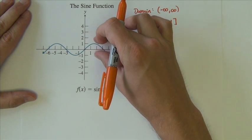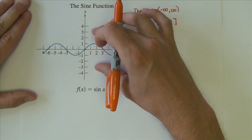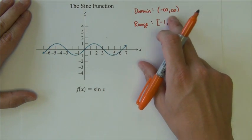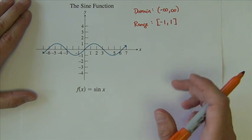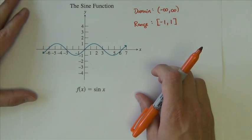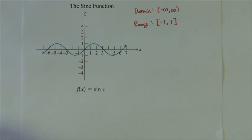The range will always be this unless there's what we call amplitude change. The wave, the curve could stretch. It could grow a little bit. But for the basic sine function, this is its range, including the negative 1 and 1 as endpoints on that range.